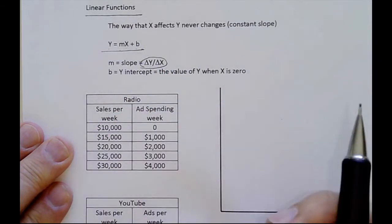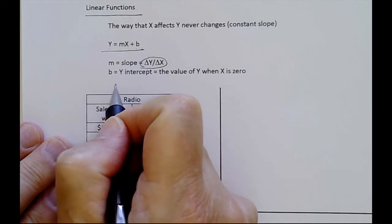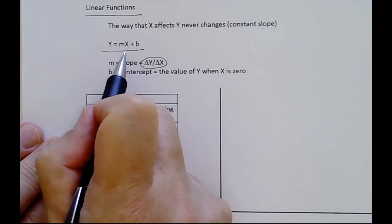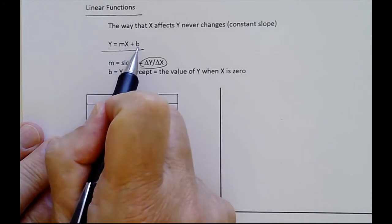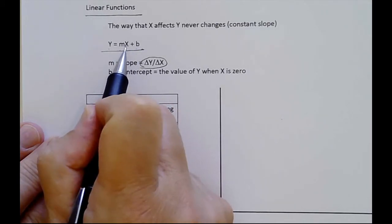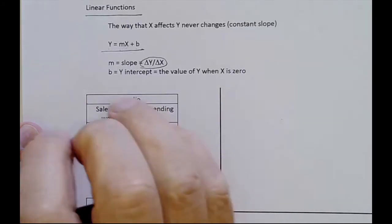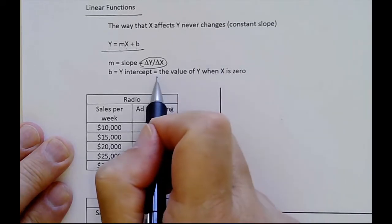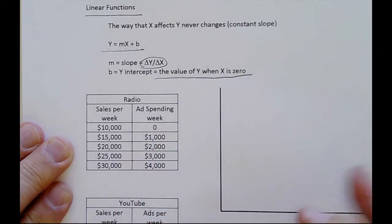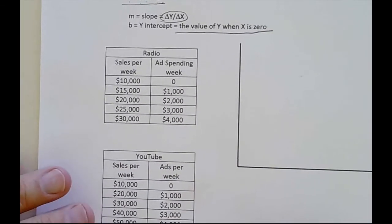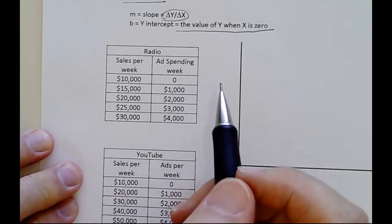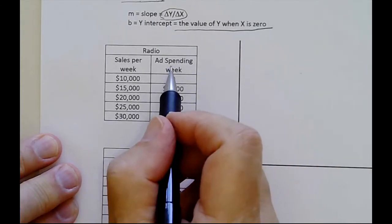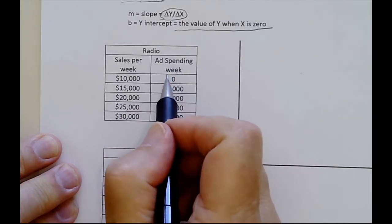And b, the y intercept, doesn't tell us anything about the relationship between x and y. It simply tells us if x is nothing, what y is going to be. If x is 0, then m times 0 is 0, and now we have y equal to b. So b tells us the starting point, the value of y when x is 0.